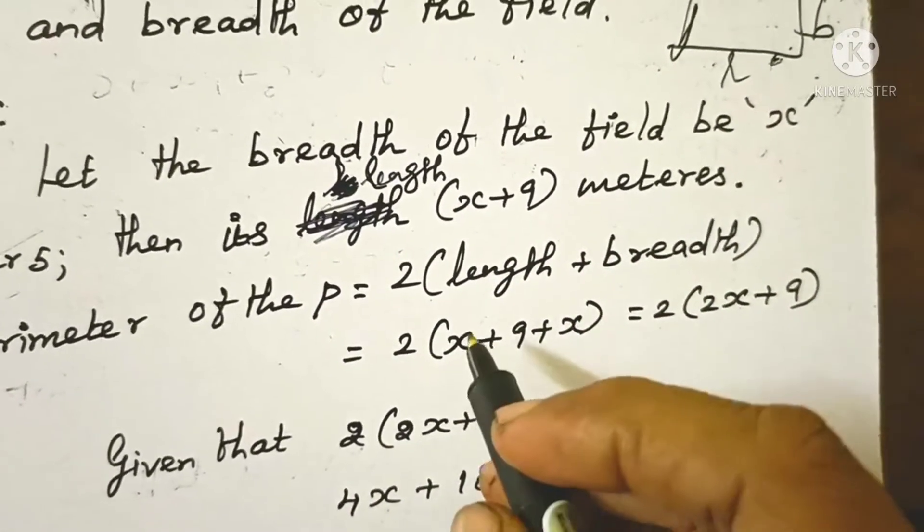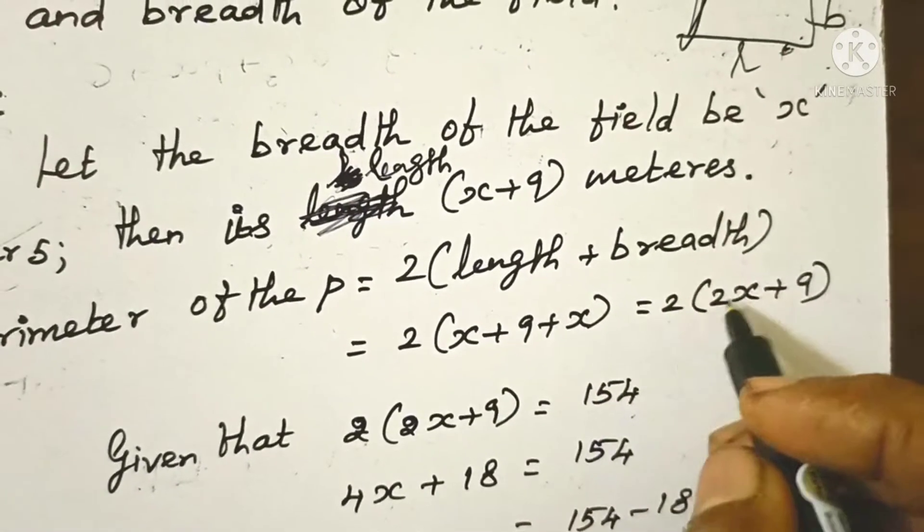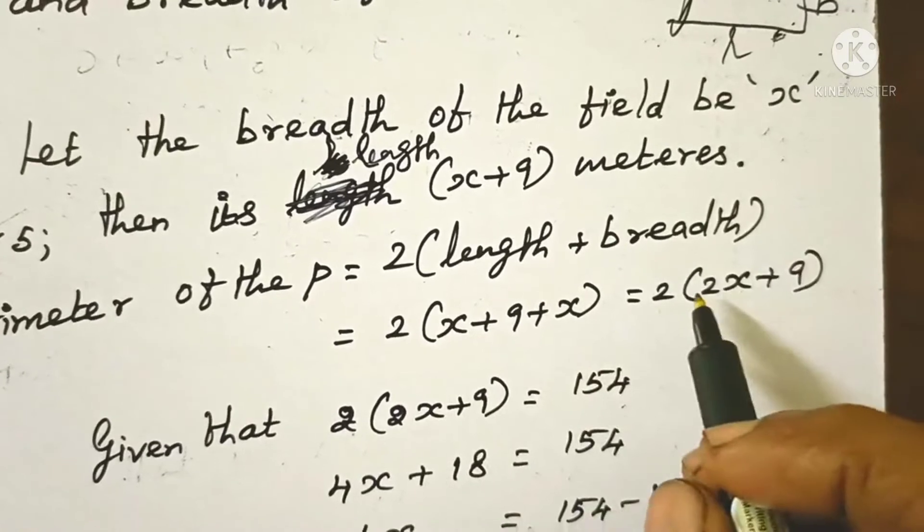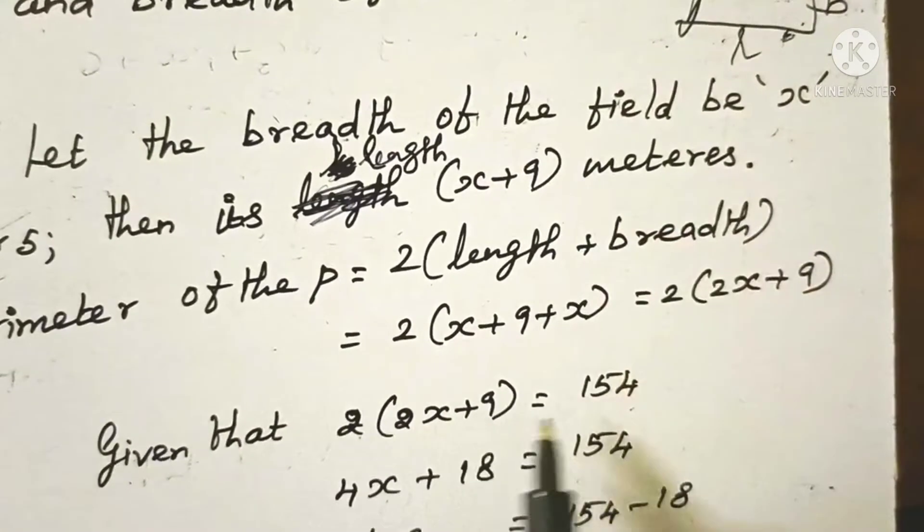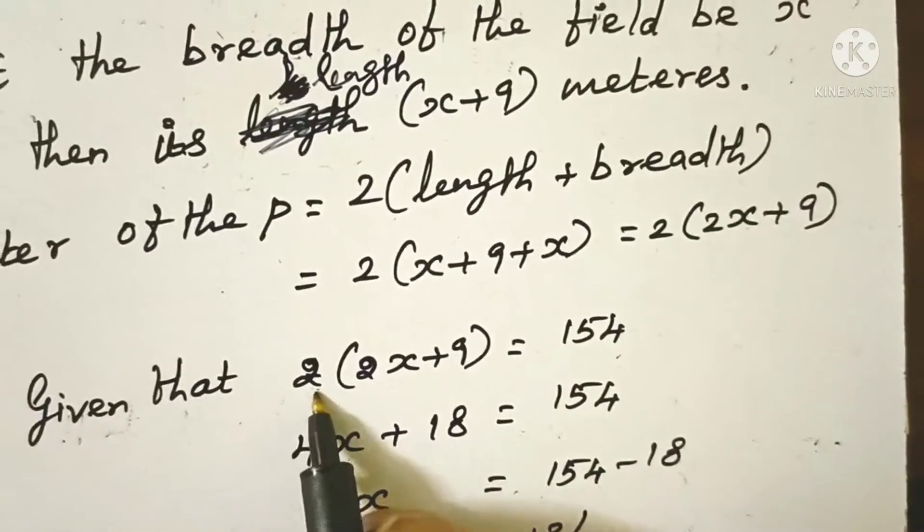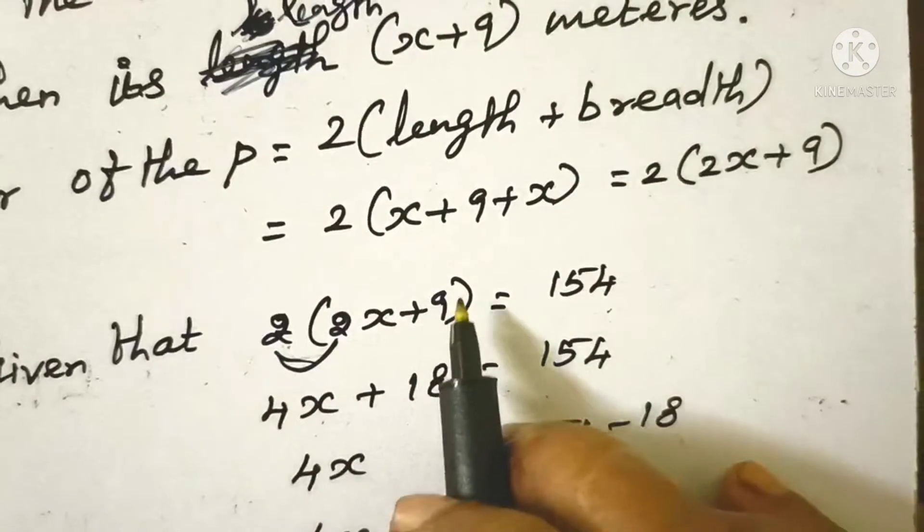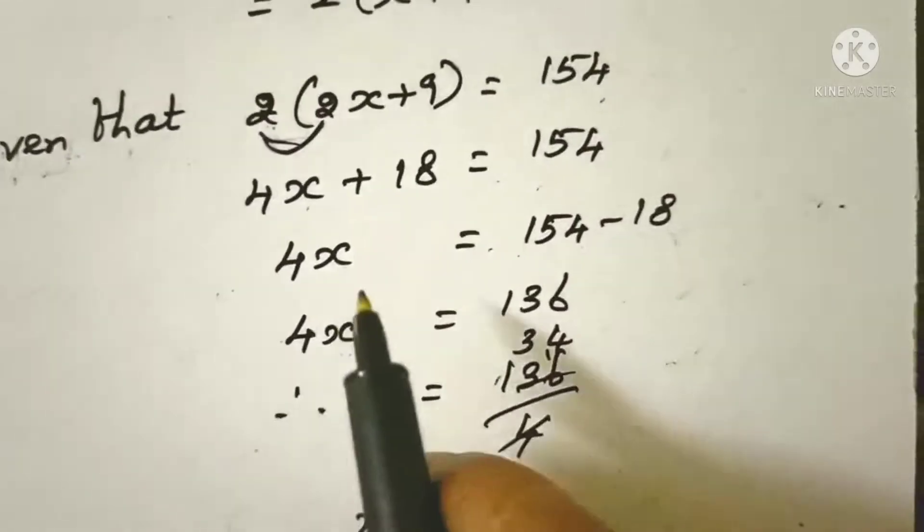is (x + 9) meters. The perimeter equals 2(length + breadth), so 2(x + 9 + x) = 2(2x + 9) = 154. Expanding: 2 times 2x is 4x, 2 times 9 is 18, giving us 4x + 18 = 154.